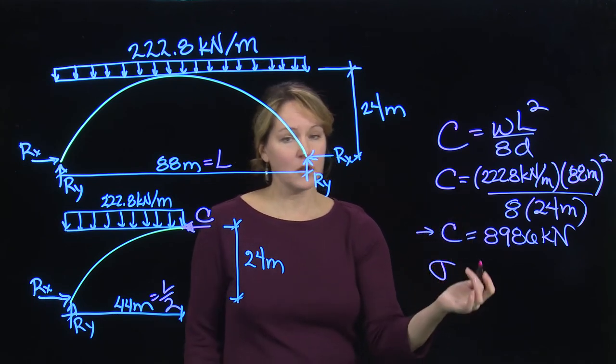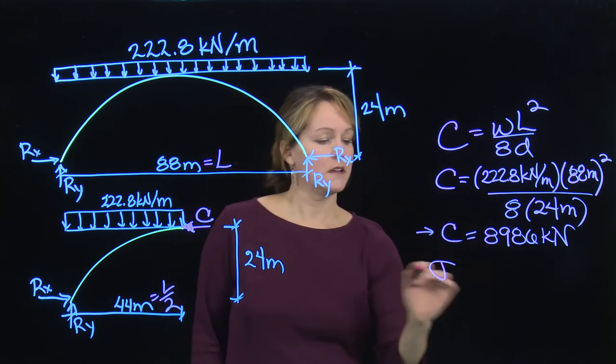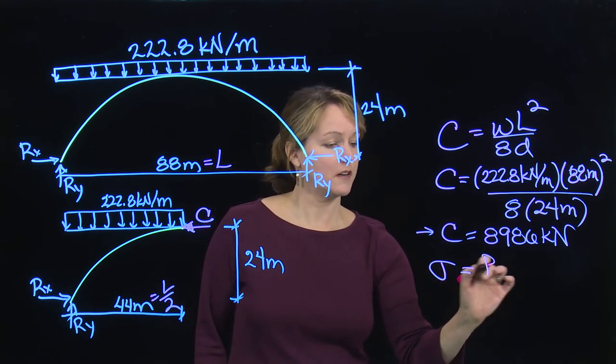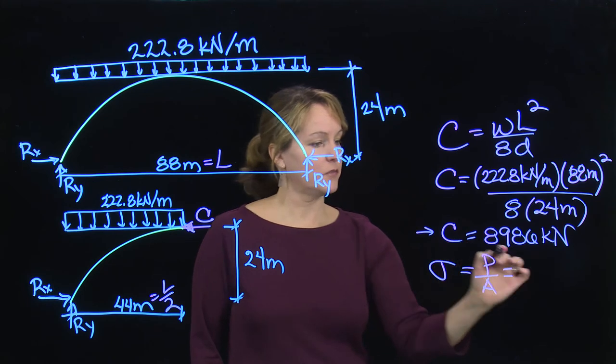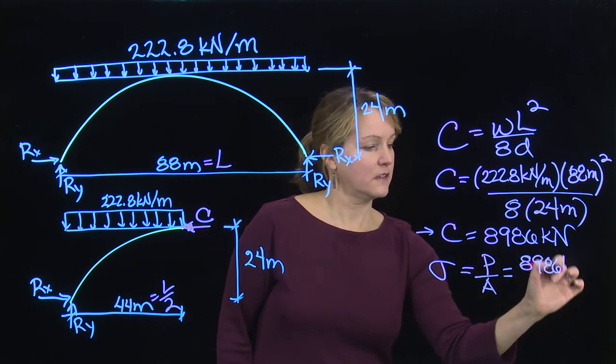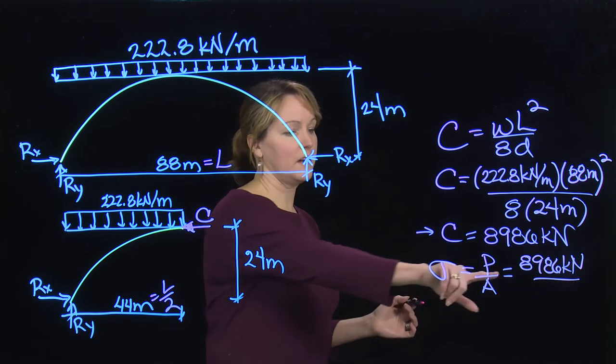To calculate the stress, we'd go back to what we learned with columns. I'm going to look at a compressive stress, so that will just be force over area. In this case, the force is 8,986 kilonewtons, and that gets divided by the area.